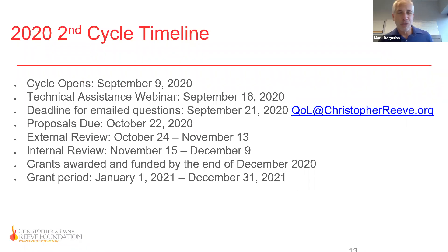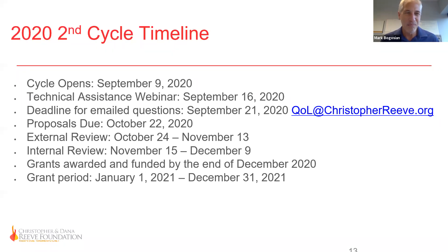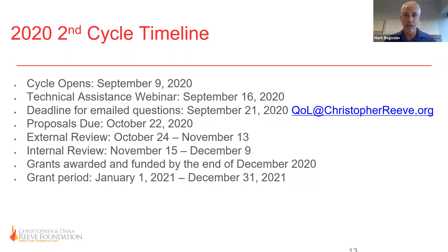Our timeline: we opened last week; today is our technical assistance webinar. The deadline for questions is next Monday the 21st to QOL at ChristopherReeve.org. Proposals are due October 22nd at 11:59 PM — our online grants system closes at that time and you will not be allowed to submit after that. There's an external review process from October through November, then an internal review process. You would be notified by end of December either way. The grant period runs January to December 2021.